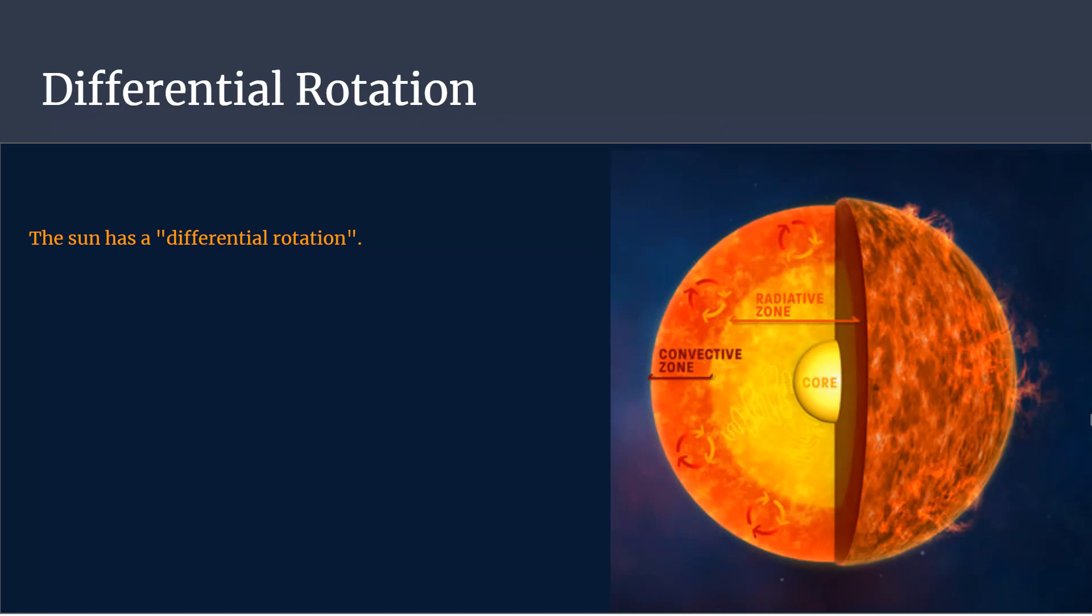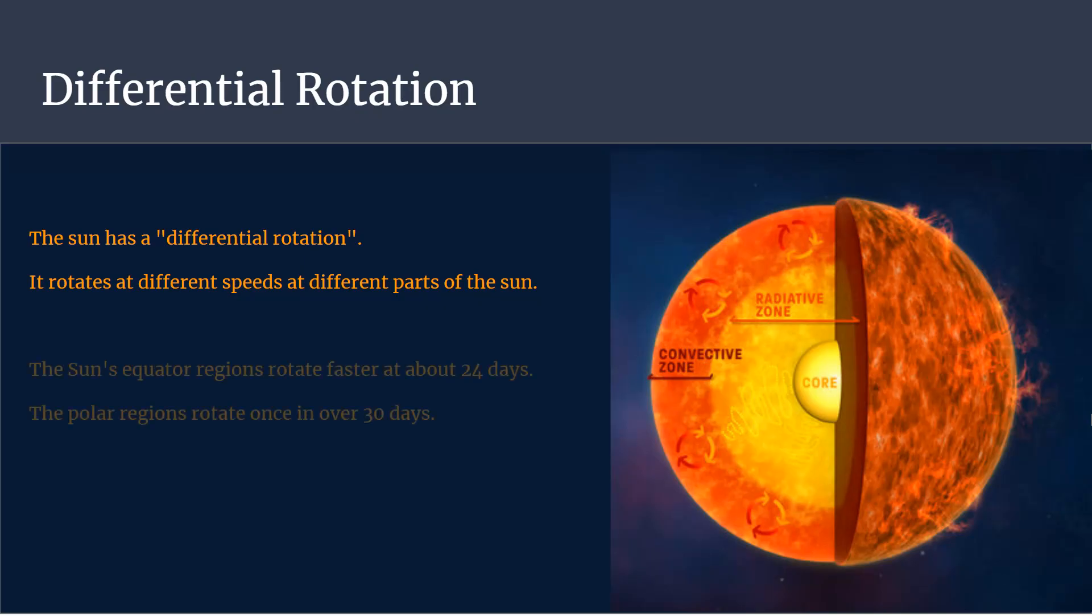The sun has a differential rotation. It rotates at different speeds at different parts of the sun. The sun's equator regions rotate faster at about 24 days.